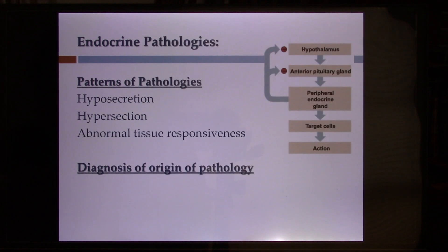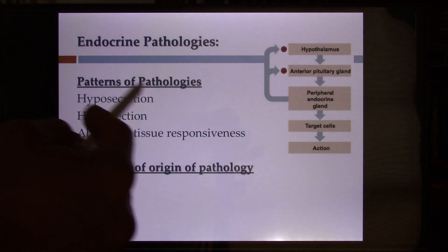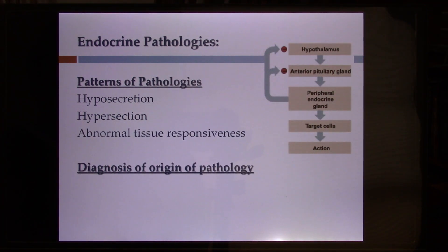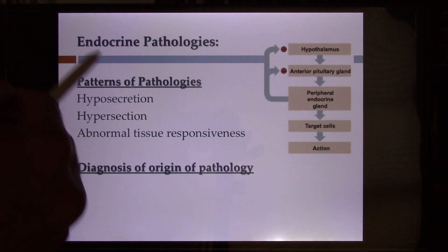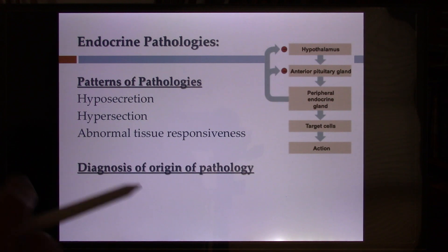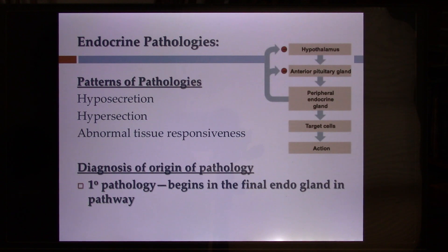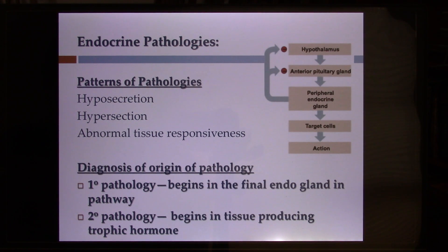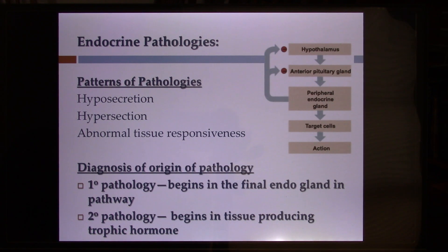If the system goes out of control, it could be hyposecretion or hypersecretion. A tumor in the hypothalamus could kill cells, causing hyposecretion of CRH. A tumor in the pituitary gland could trigger cells to release hormone excessively, causing hypersecretion. If the problem happens in the final gland — for example, the adrenal gland in the CRH pathway — we call it primary pathology. If it happens in the hypothalamus or anterior pituitary gland, we call it secondary pathology. You will have more practice in the discussion exercise.